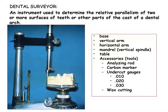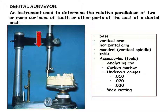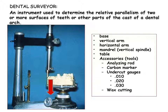The items you will need to survey the cast are the surveyor, surveyor table, and surveying tools. The surveyor consists of a base or platform, vertical arm, horizontal arm, and a vertical spindle or mandrel. The vertical spindle moves up and down and is secured with a lock knob. The cast is secured to a swivel table with a locking pin. A small collet on the vertical spindle is used to secure the analyzing rod, undercut gauges, cutting tool, and carbon marker.